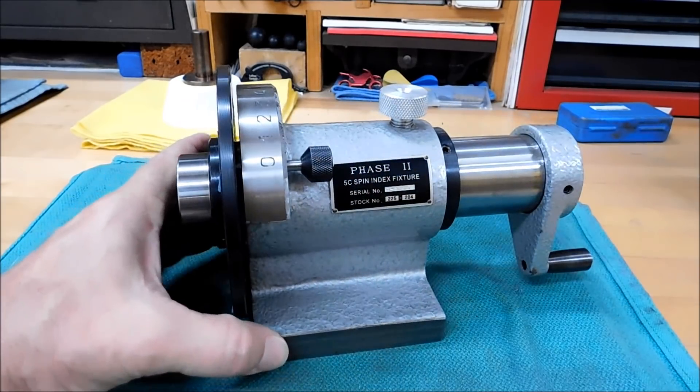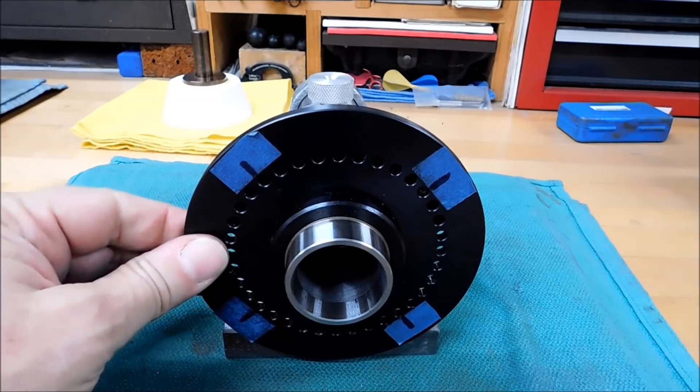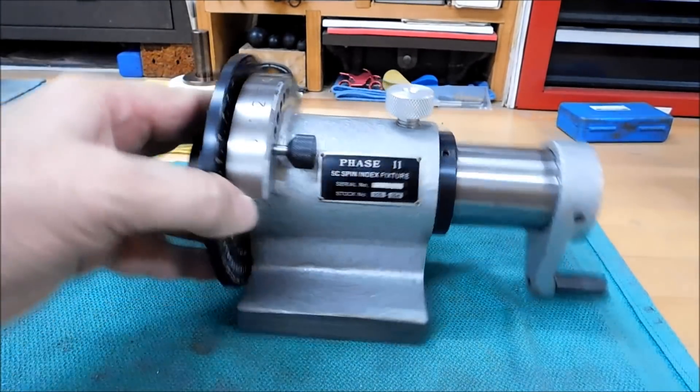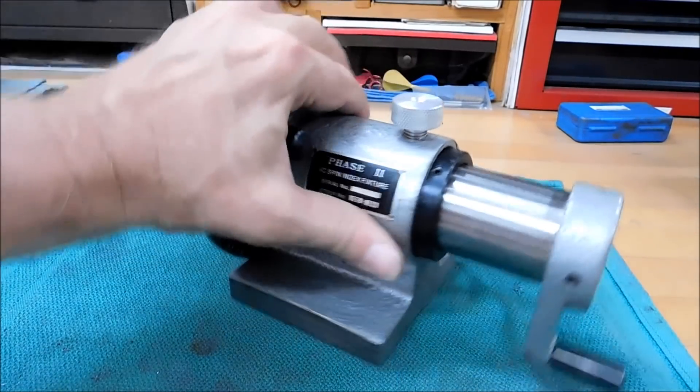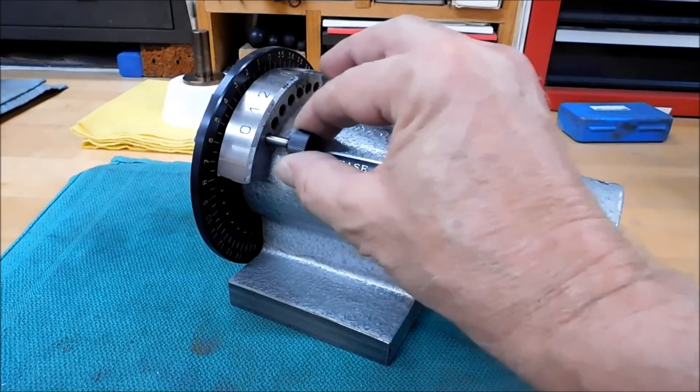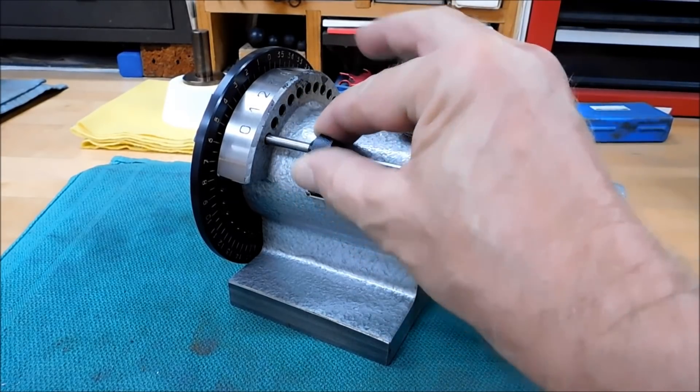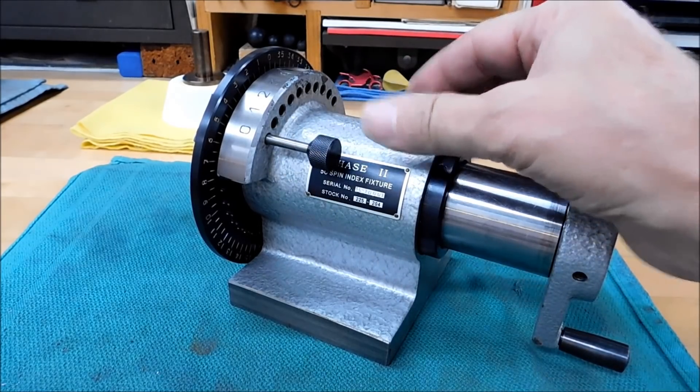Today we're going to play with this little guy right here. This is a spin indexer. It has a fixed plate on the front with 36 holes on it and 10 holes in the back. This is the locking pin, so when you pull this out, and it does come all the way out, it's supposed to. This is a brake or drag or a lock, whatever you want to call it.